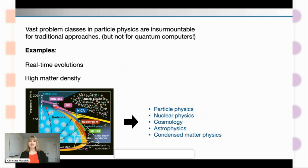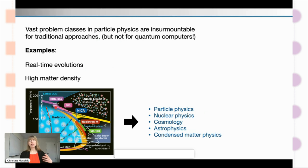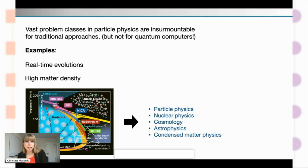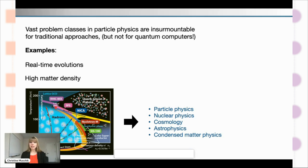This really gives us a sense of how powerful a quantum computer would be. It would be very beneficial because just from this phase diagram you could answer questions in particle physics, nuclear physics, cosmology, astrophysics, and condensed matter physics.